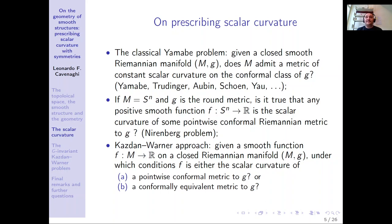In the case where M is the standard sphere and we begin with the round metric — namely the metric with constant sectional curvature — it poses the question: is it true that any positive smooth function can be realized as the scalar curvature of some pointwise conformal Riemannian metric to the round metric? This remains more or less open. There are results showing that positivity does not suffice; there are other obstructions concerning the symmetries of the function, and the definitive answer is open.